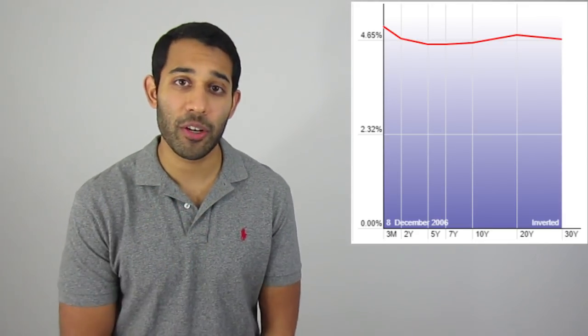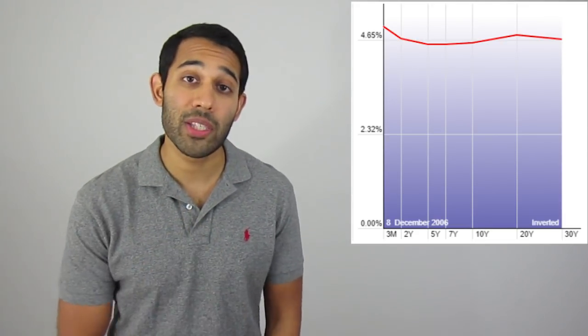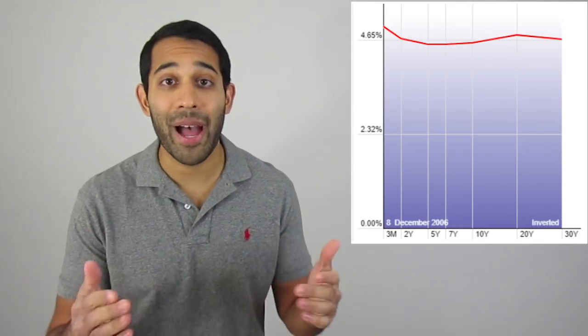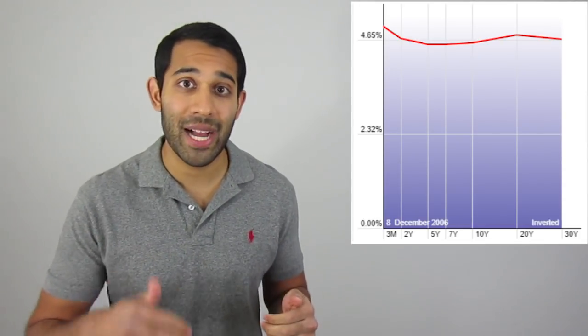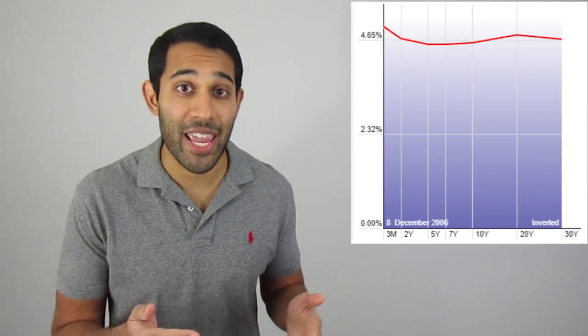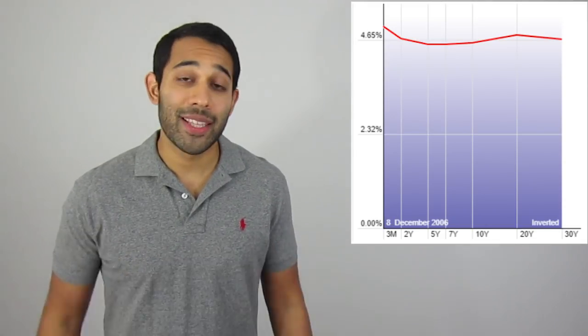Two things happen for the yield curve to become like this. First, the Fed starts raising short-term rates — based on their mandates they see the economy overheating and decide to raise rates to slow it down, and higher rates tend to hurt economic expansions. Second, investors' expectations for the future become negative, and because of that they buy up long-term bonds, lowering their yield. Those two together give you a flat or inverted yield curve, where short-term bonds yield the same or even more than long-term bonds — and this signals trouble ahead.